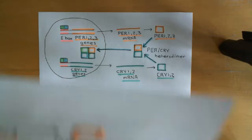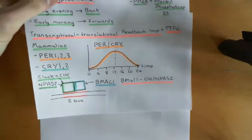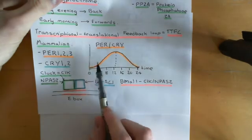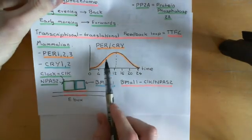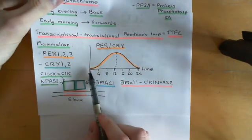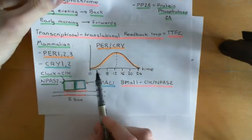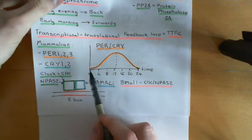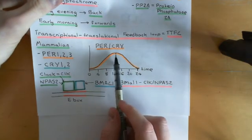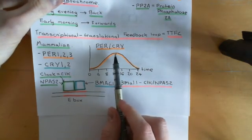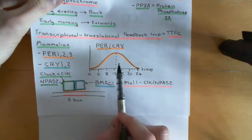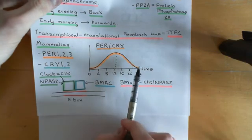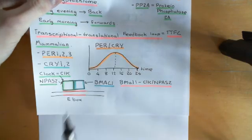So they're at their lowest at midnight, and then they rise throughout the morning period from zero o'clock in the morning to midday. They reach their peak at midday, and then from midday to midnight they then fall back down.